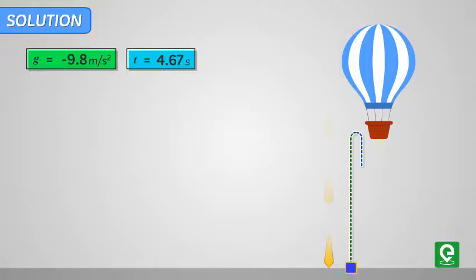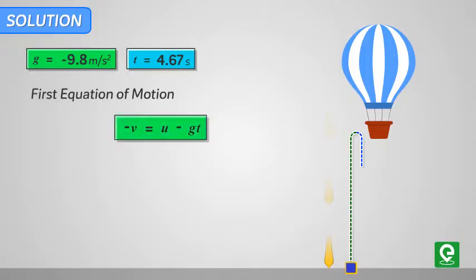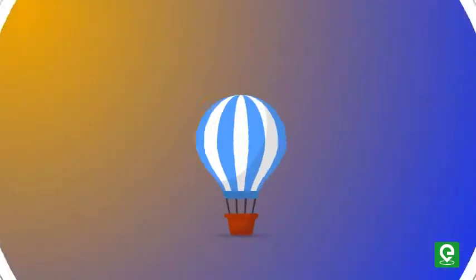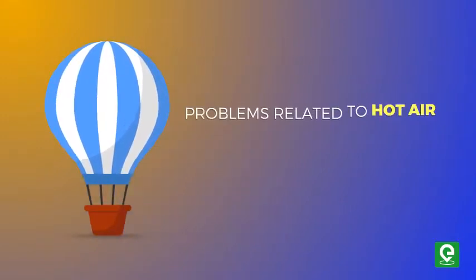Here u is the initial velocity at the maximum height which is 0, hence v = gt. On substituting the values we get v equal to 33.81 meters per second. This is the speed with which the package hits the ground.